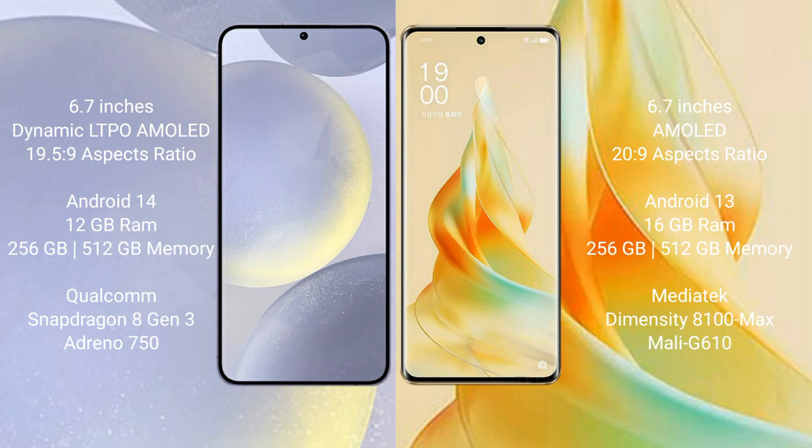OPPO Reno 9 Pro comes with a 6.7-inch AMOLED display and an aspect ratio of 20:9. Samsung Galaxy S24 Plus runs on the Android 14 operating system, while OPPO Reno 9 Pro runs on Android 13.